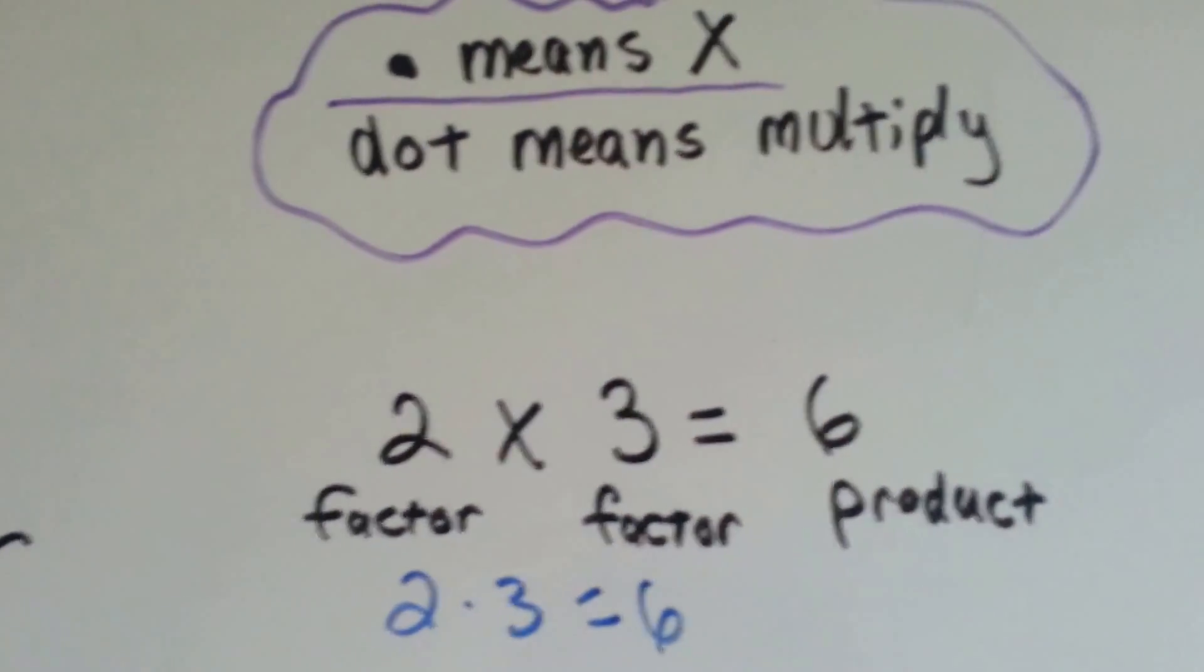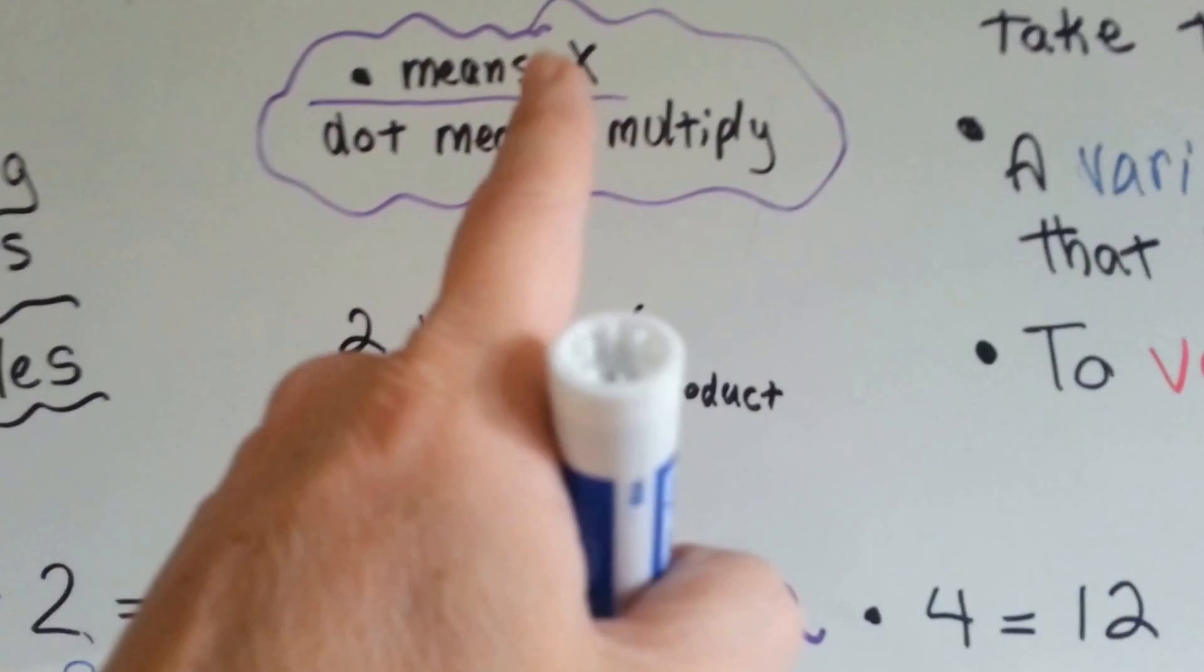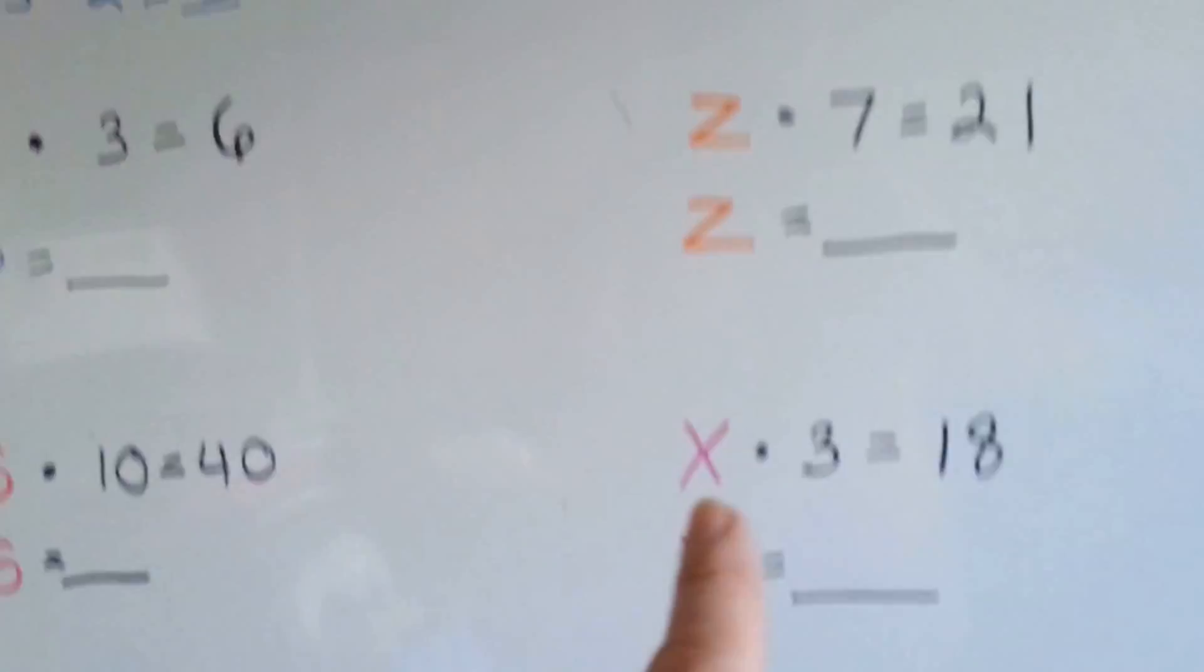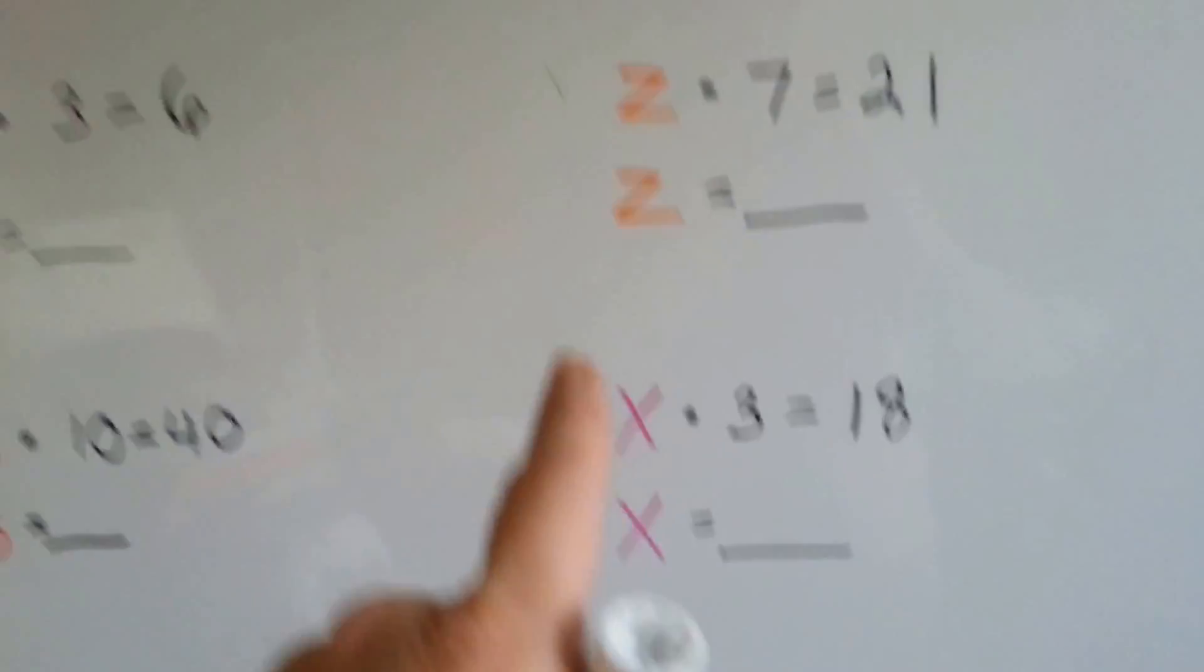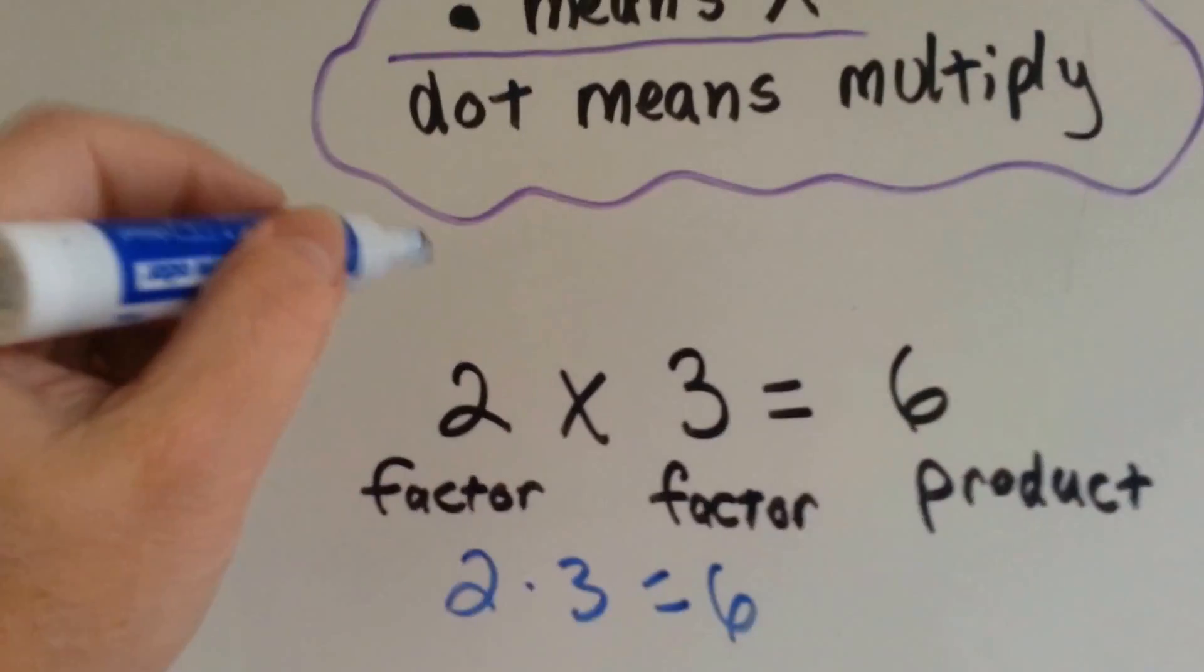Now, why would they do that? Well, they do that because of variables. What if your variable was an x? If your variable was an x, it would look like this.